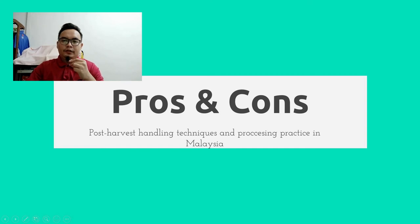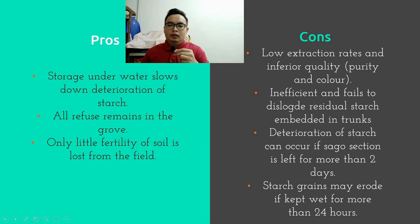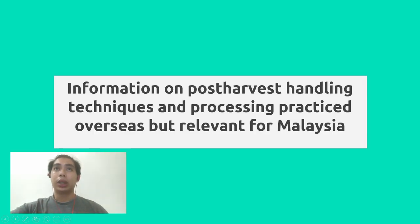Next is pros and cons. The pros are: storage underwater slows down deterioration of starch, all refuse remains in the grove, and only little soil fertility is lost from the field. The cons are: lower extraction rate and inferior quality in terms of purity and starch quality.